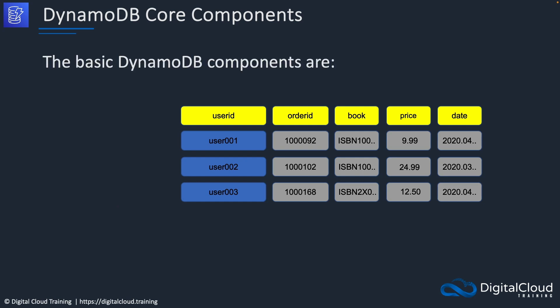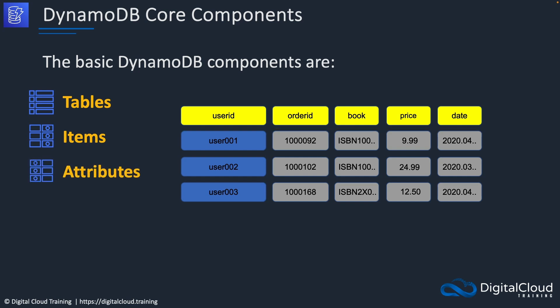The core components of DynamoDB are tables, items, and attributes. We create tables within the DynamoDB service. Within the tables we have items — think of items as the individual entries in the table. Each item has attributes, which are the actual values associated with each record. For example, user 002 would be one item in the table, and the attributes are the values associated with that key. This is a key-value store — the key is the user ID and the values are the attributes associated with that key.